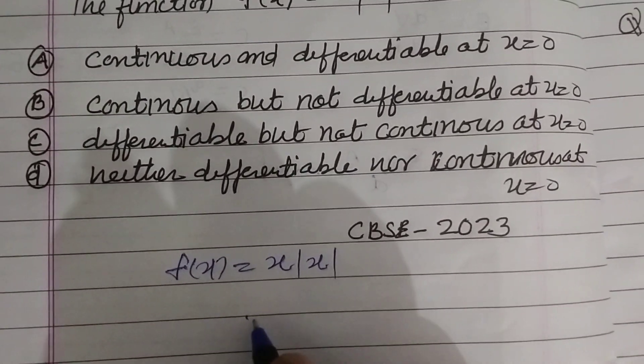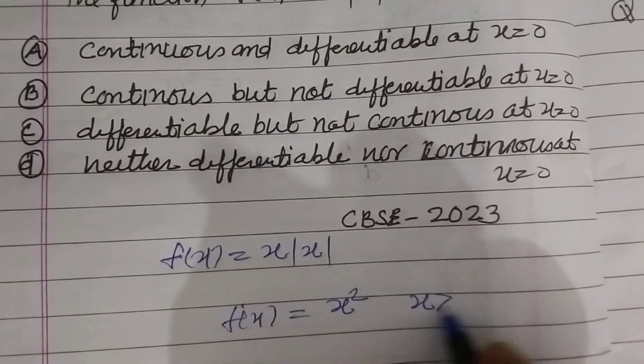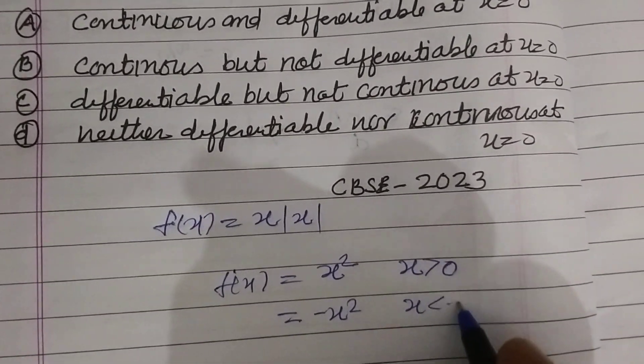So f is equal to x square when x is greater than 0, it is equal to minus x square when x is less than 0.